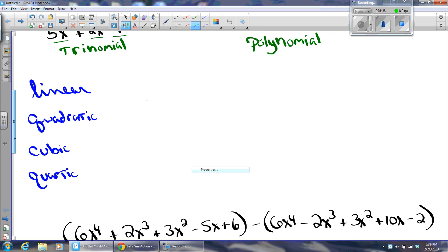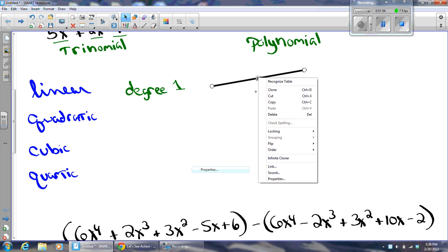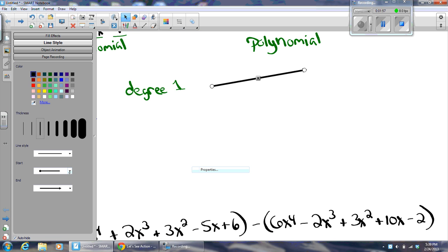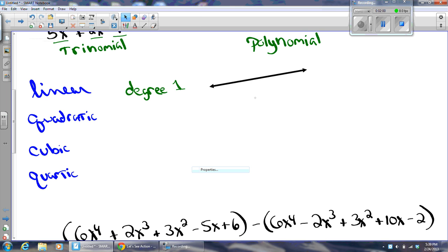Now, naming by degree is pretty easy, too. First of all, we have linear. Linear means degree one. And why do you suppose they call it linear? Because it makes a line. Wait, that's not a line? Who can tell me why that's not a line?